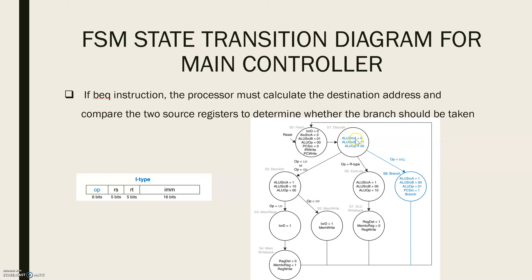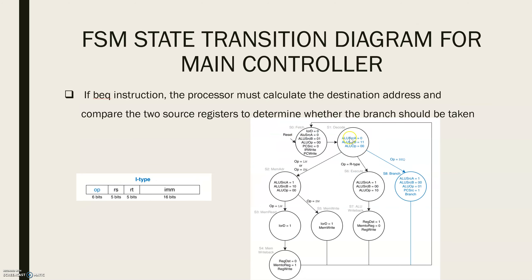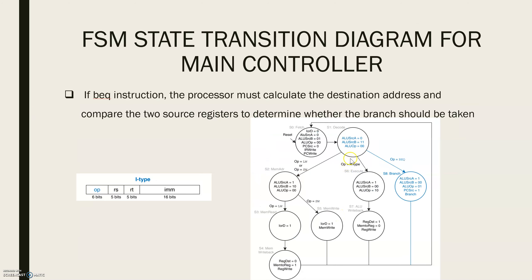Here ALU SRC A is 0 to select the incremented PC. ALU SRC B is 11 to select the sign immediate multiplied by 4 and ALU OP is 00 to add.